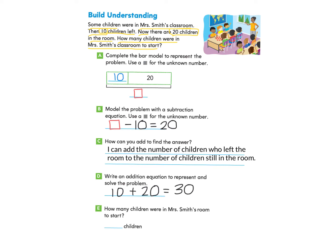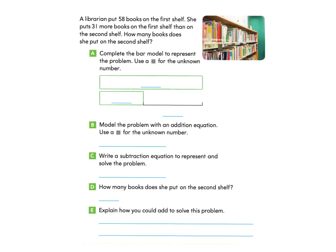We have solved the problem. How many children were in Mrs. Smith's room to start? We can answer: 30 children. Great job. Let's take a look at the next page, page 345.